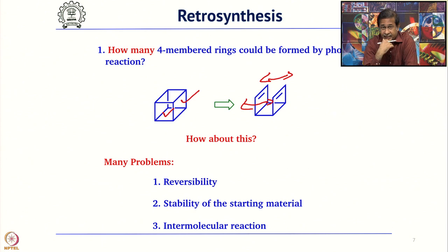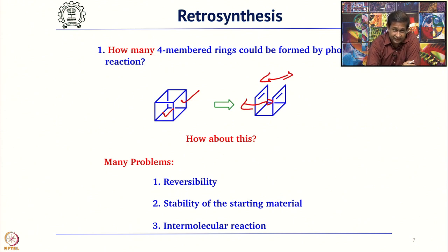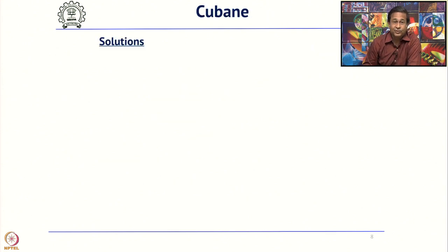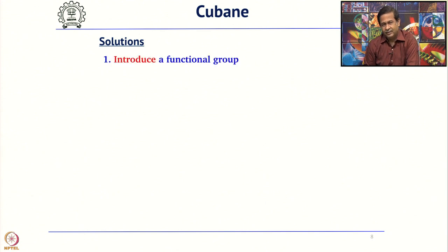Though the idea is very good to construct 3 four-membered rings in one step by doing only one 2+2 cycloaddition, there are problems. Though it is logical, in practice this is not a good scheme. So, how to avoid this? What are the various solutions possible?